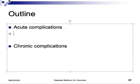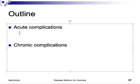Acute complications occur when there is too much increase or decrease in the level of glucose for a short period of time. Chronic complications occur when someone has high blood sugar levels over a long period of time, damaging certain structures in the body. Due to increased glucose levels over a long period of time, there are two types of complications: microvascular and macrovascular.